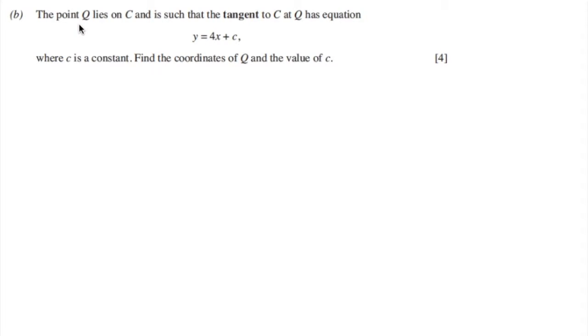Curve C has equation y equals x squared minus 8x plus 10. The point P has coordinates 3, minus 5 and lies on C. Find the equation of the normal to C at P.